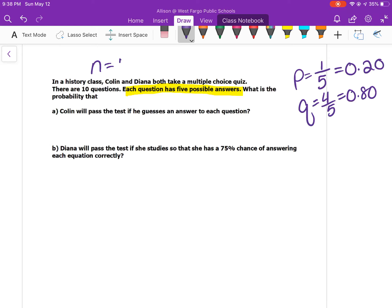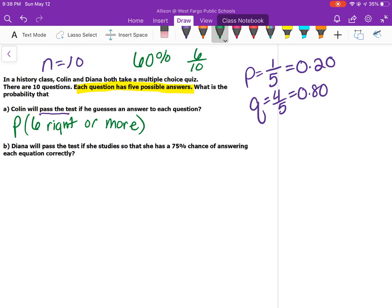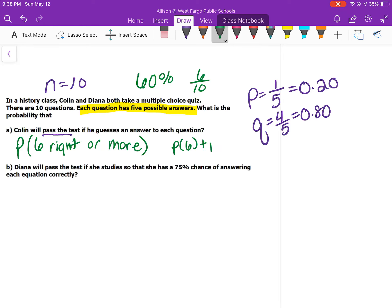There are 10 questions, so N is 10. Colin wants to guess, and we want to know if he will pass the test. To get a passing grade that's 60%, he's going to have to get 6 out of 10 correct or more. So we want the probability of 6 right or more, which is P of 6 plus P of 7 plus P of 8 plus P of 9 plus P of 10. Our formula is n combinations of r, p to the r, q to the n minus r. In each one r changes.